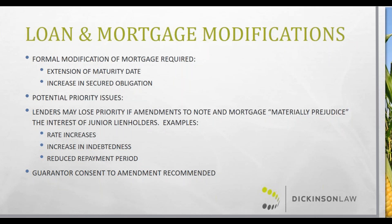The general rule is that a senior lender doesn't lose priority if it modifies a mortgage, except to the extent it materially prejudices junior lien holders — the penalty for which is loss of priority. Increases in interest rates, increases in the amount of debt, and reduction in the repayment period are considered prejudicial. For example, if the interest rate is increased from 5 to 10 percent, that additional 5 percent interest may not have priority over liens recorded after the original mortgage but prior to the modification. Decreases in interest rates, reduction in the total loan amount, or extension of the repayment period typically benefit junior lien holders and won't create priority issues.